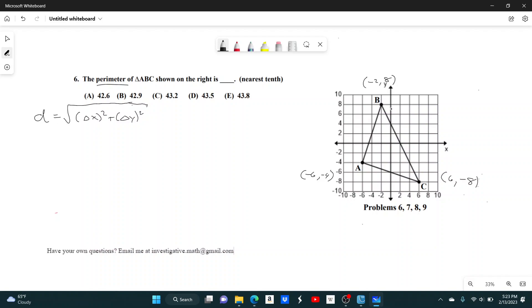If I'm going from A to B, my change in x from negative 6 to negative 2, that's 4 squared is 16. And then my change in y from negative 4 to 8, that's 12 squared is 144. I'll simplify this later.